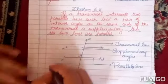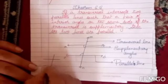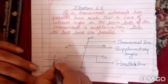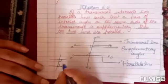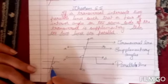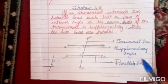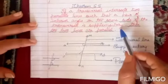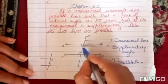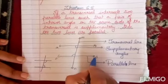Now you explain. Say: if a transversal intersects two parallel lines such that a pair of interior angles on the same side of the transversal are supplementary, then these two lines are parallel. So what Theorem 5 is saying is: if these two interior angles are supplementary, then these two lines are parallel.